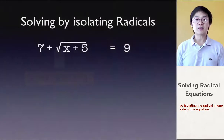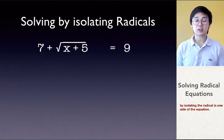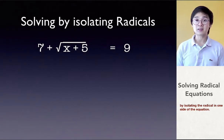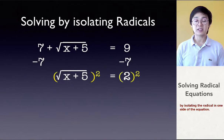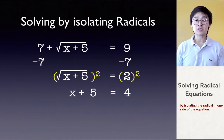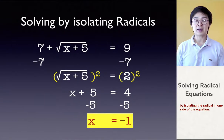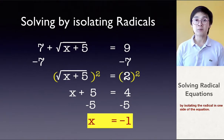Now, take a look at this example: 7 plus square root of x plus 5 is equal to 9. This one is not as complex as the previous examples because all we need to do is isolate the square root symbol by subtracting 7 on both sides and taking the square of both sides, which gets rid of the radical symbol. Then we solve for x by subtracting 5 on both sides, leaving us with x equal to negative 1. Sometimes radical equations are easy to solve, and sometimes they require more algebraic skill.